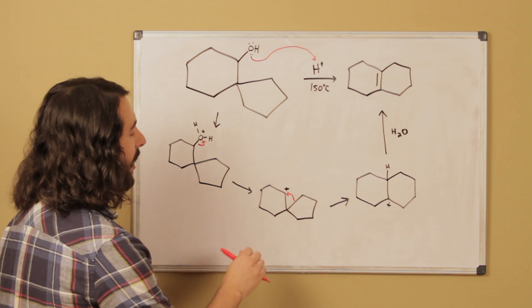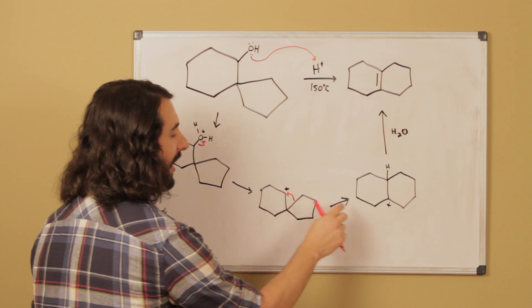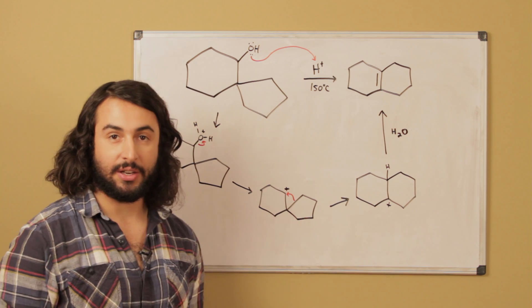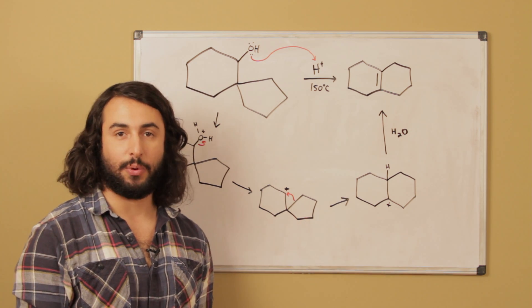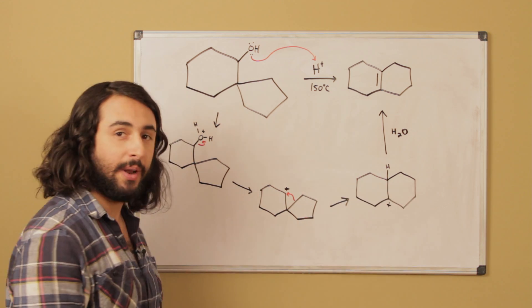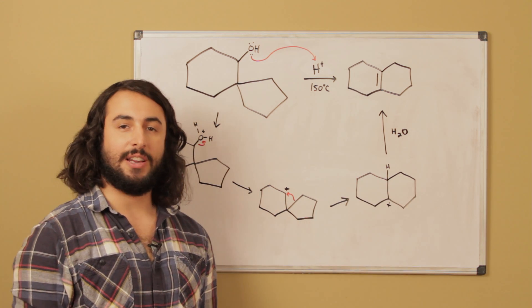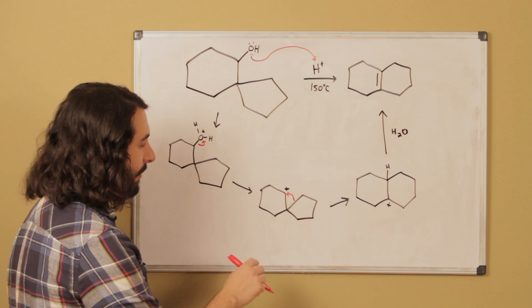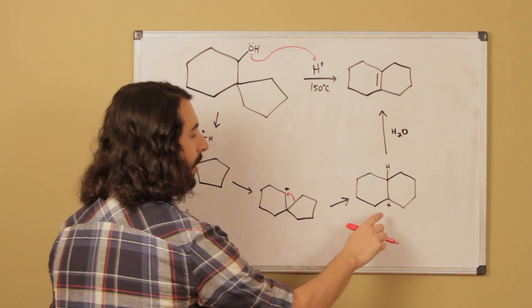And this is favorable for two reasons. Number one, we turn a secondary carbocation into a tertiary carbocation, so that's a driving force. But then the other thing we're doing is turning a five-membered ring into a six-membered ring. So there's a lot going on here that makes this a favorable rearrangement.